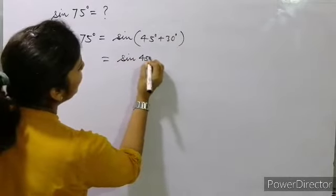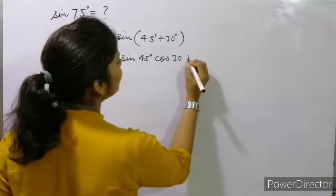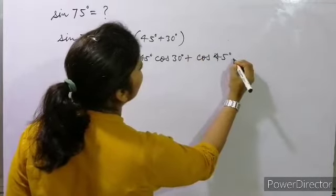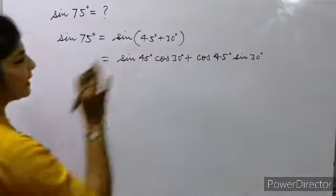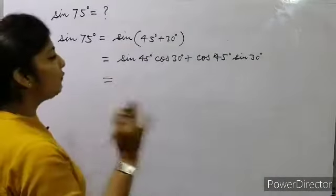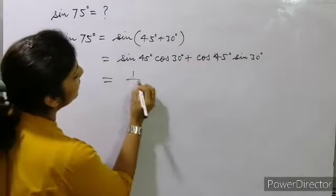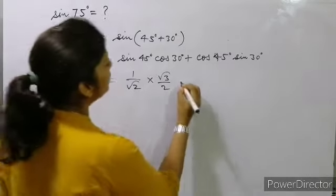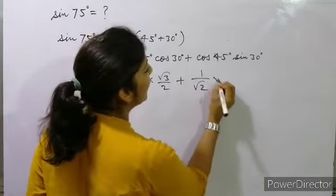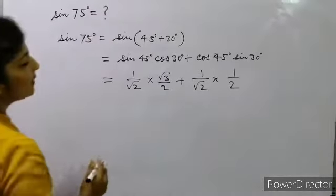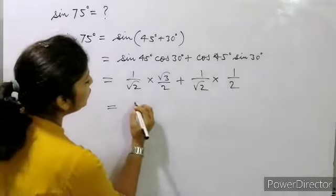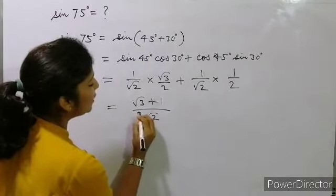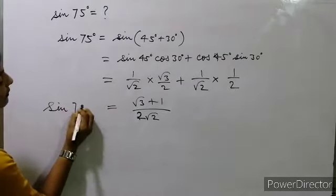The formula is sin x cos y + cos x sin y. Here x = 45° and y = 30°. So it becomes sin 45° cos 30° + cos 45° sin 30°. The value of sin 45° is 1/√2, cos 30° is √3/2, cos 45° is 1/√2, and sin 30° is 1/2. So the result is (√3 + 1) / (2√2). This is the value of sin 75°.